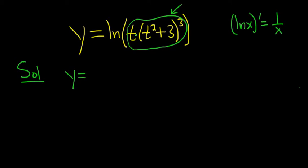Here it's the natural log of t times this stuff. So that's ln t plus ln of t squared plus 3 cubed. We can break it up because it's a product.